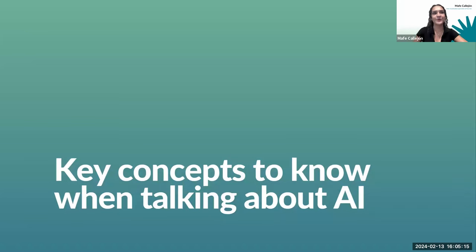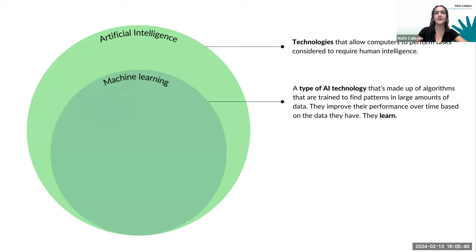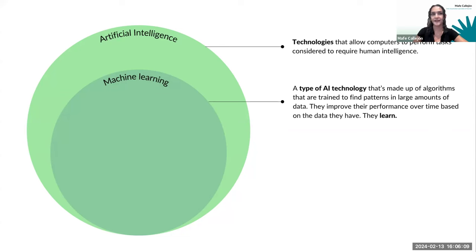Let's begin with key concepts to know when talking about AI. AI has been all over the news, but what really is it? Artificial intelligence is simply a collection of technologies that allow computers to perform tasks considered to require human intelligence. Within AI, you may have also heard of machine learning — a type of AI technology made up of algorithms trained to find patterns in large amounts of data. They improve their performance over time based on the data they have, so they learn, which means these tools are constantly evolving.